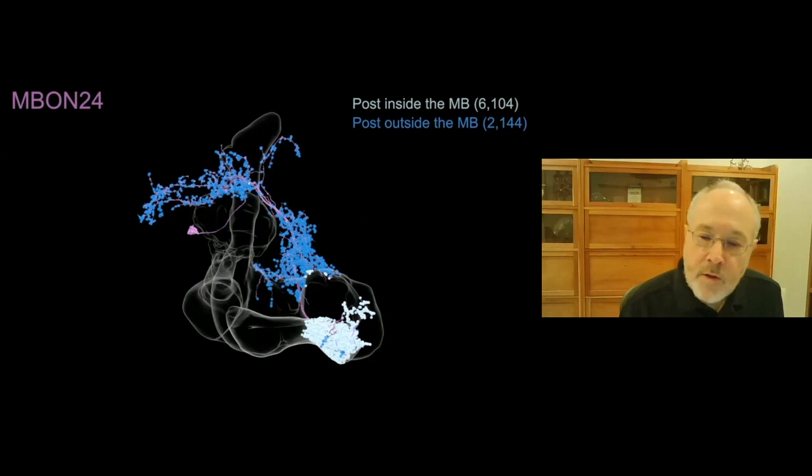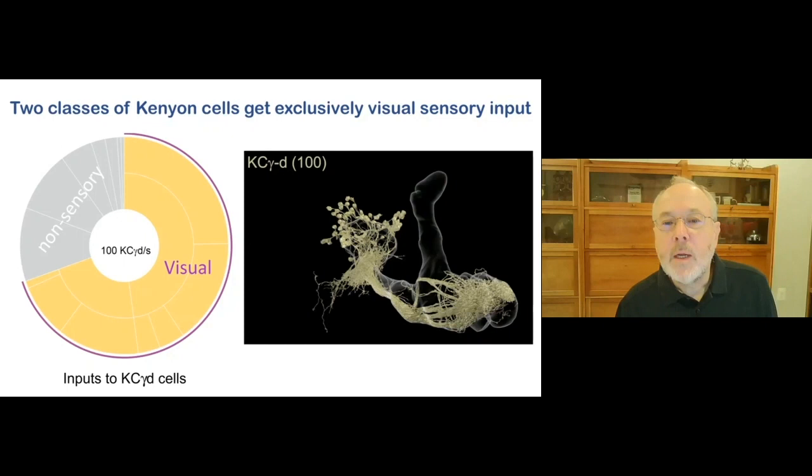It also receives about 25% of its synaptic input outside the mushroom body. So what makes this new type of mushroom body output neuron unusual is it has inputs both inside the mushroom body lobes and outside the mushroom body lobes. In comparison to the classically described mushroom body output neurons whose total dendritic input is inside the mushroom body lobes.